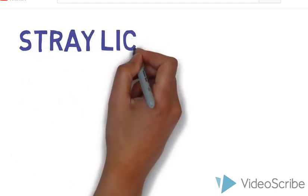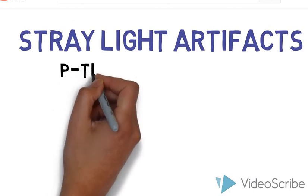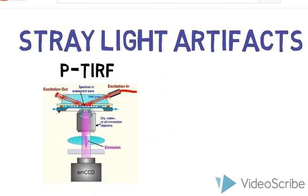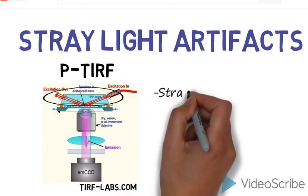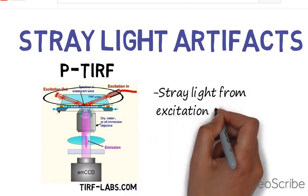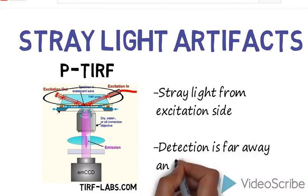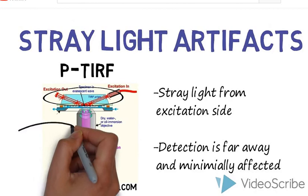To get really nice nanoscale images, one wants to minimize any stray or scattered light that might cause artifacts in detection. In this category, P-TIRF is the preferred geometry. In P-TIRF, stray light can come from scattering at the glass-water interface or at the prism. Because the collection objective is rather far away from these sources, rarely are extra measures necessary to minimize stray light.